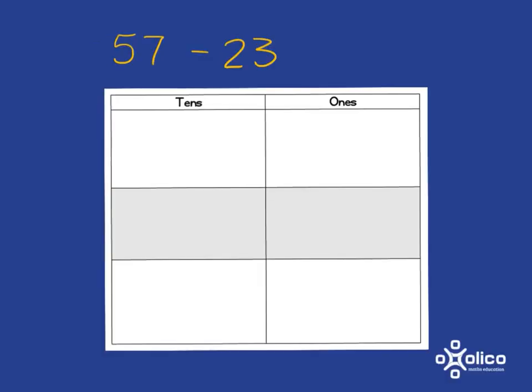Once learners are happy with the concrete representation—and hopefully that will be quite quick for them—with these kind of easy subtractions, one can make the link to a more pictorial form. It's often quite useful for you to be doing the pictorial form alongside while they're doing the concrete form so they can transition into doing the pictorial form.